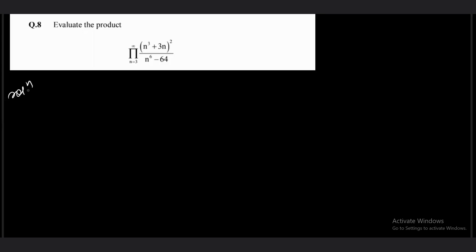The question asks to evaluate this product - continued product from 3 to infinity. Normally whenever you see this type of question, the approach is going to be similar. First of all, you will have to write the nth term properly. As you can see, from the numerator I can take one n factor common and will be left with (n² + 3)². Regarding denominator, you have (n³)² - 8².